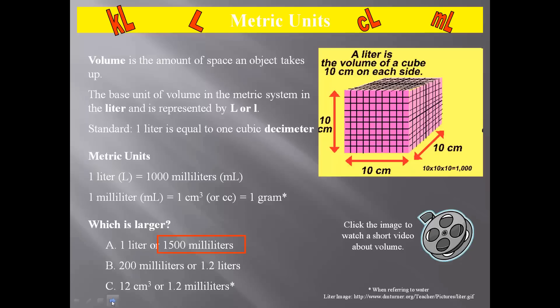200 milliliters or 1.2 liters. 1.2 liters would be 1,200 milliliters, so that should be larger. And then 12 cubic centimeters or 1.2 milliliters. It's going to be 12 cubic centimeters. Because those are equivalents, you could say 12 milliliters instead of cubic centimeters. So there's some examples there.